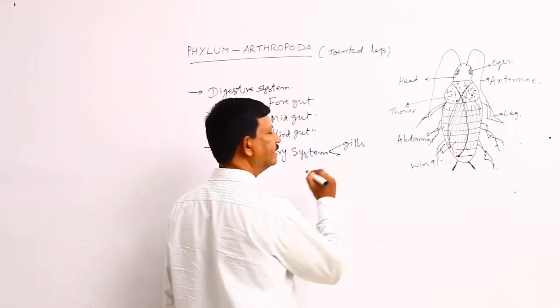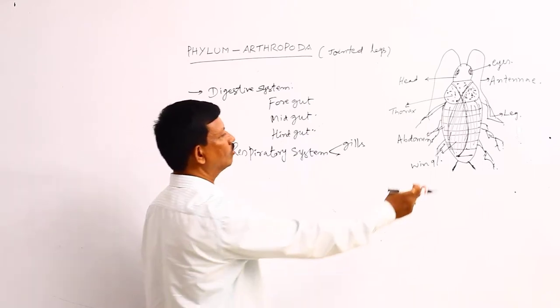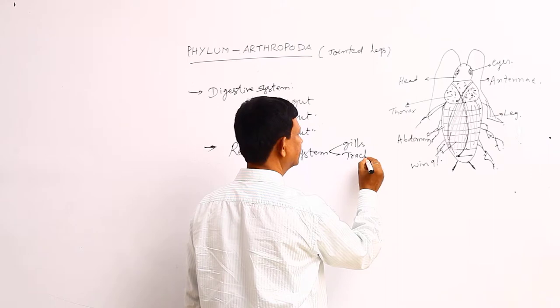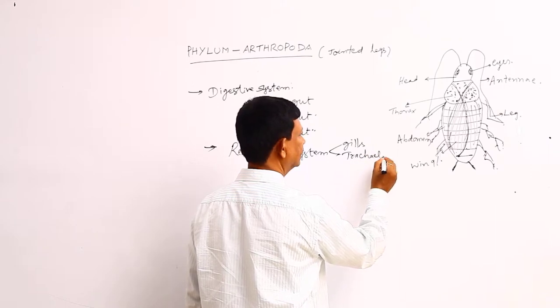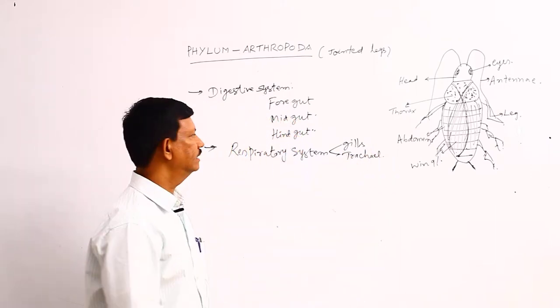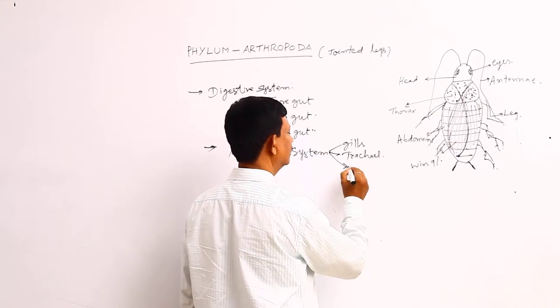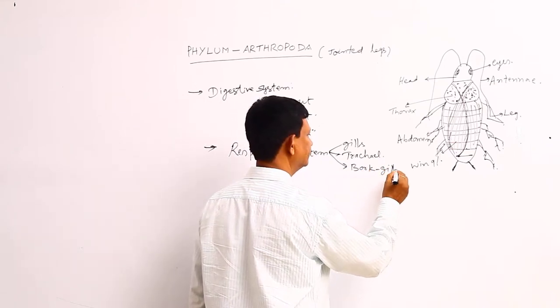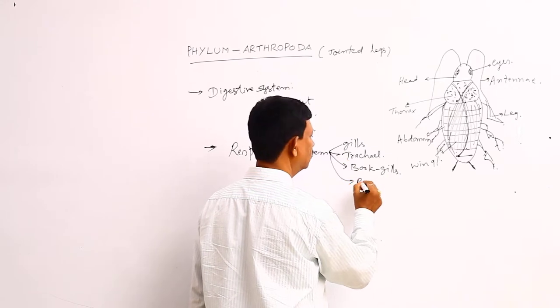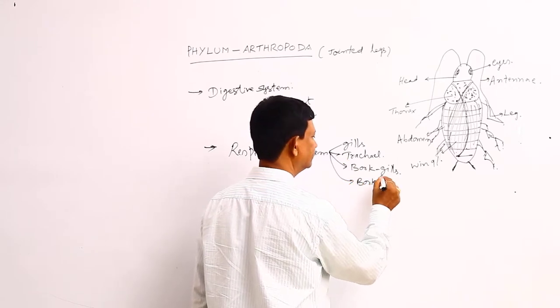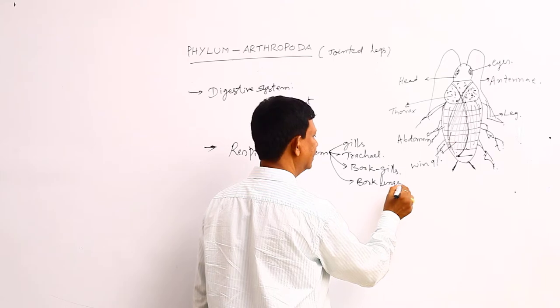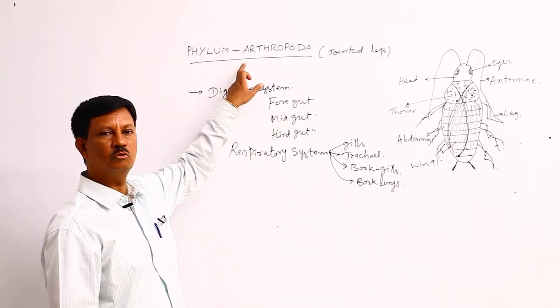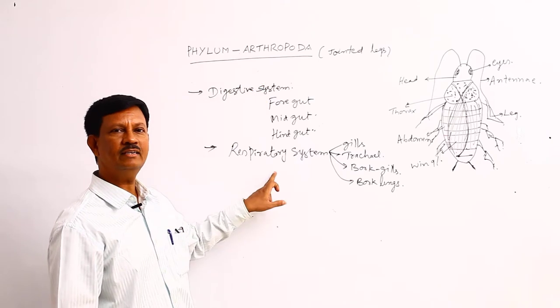In terrestrial animals, for example the cockroach, tracheal respiration takes place. In some animals, book gills are present. There are different types of respiratory organs found in the phylum Arthropoda, according to their habitat.